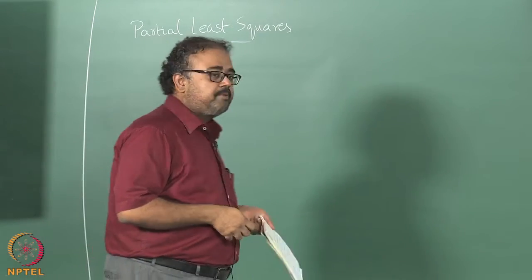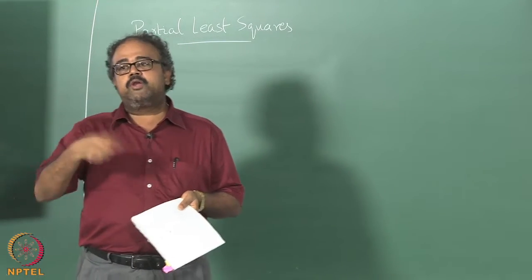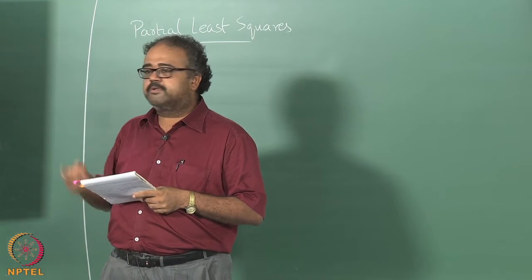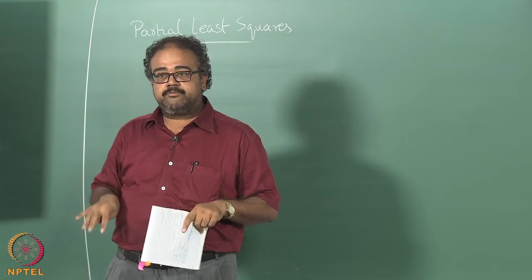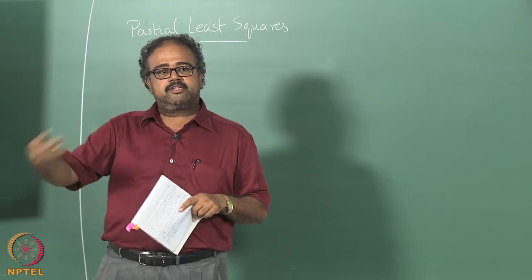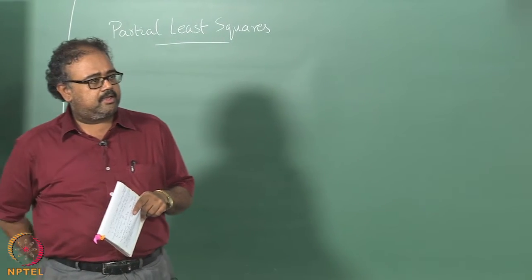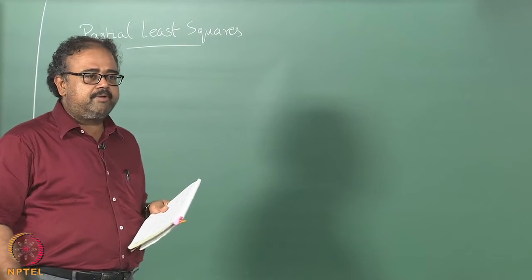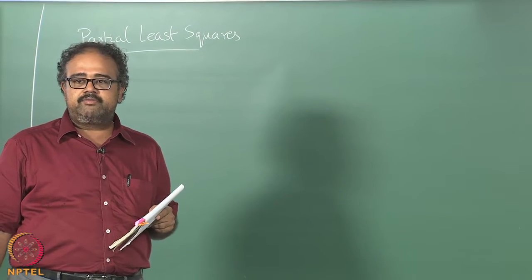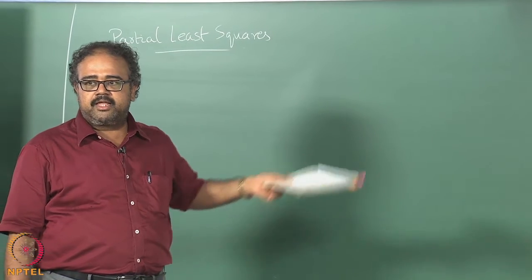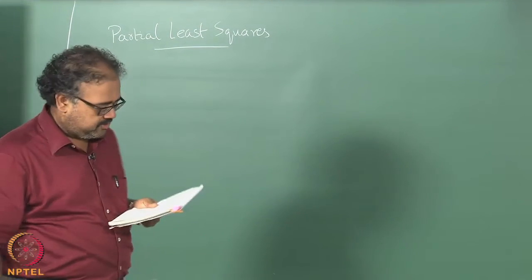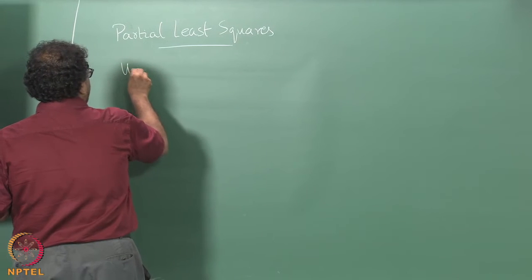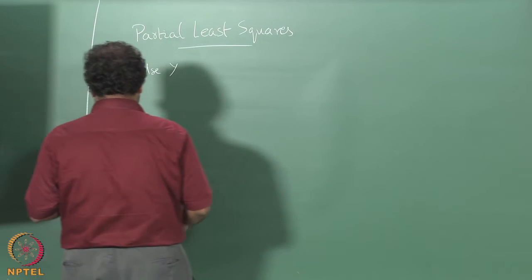The next one we look at is partial least squares, and I gave you the motivation. It is mainly because principal component regression only looks at the input data and does not pay attention to the output, and therefore you might sometimes come up with really counter-intuitive directions, like in the example I showed you with the plus and minus 1 outputs. The basic idea here is that we are going to use y as well.